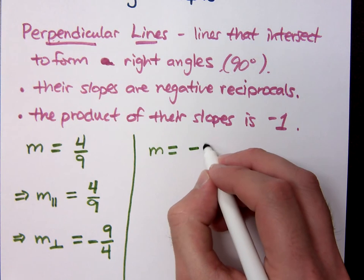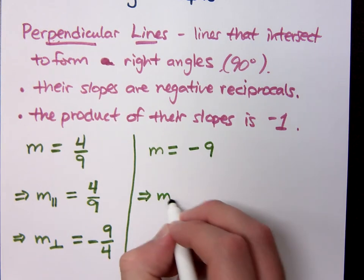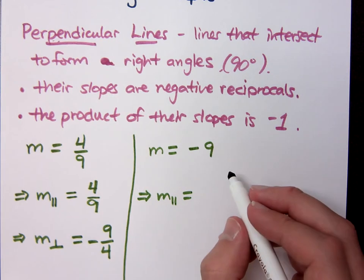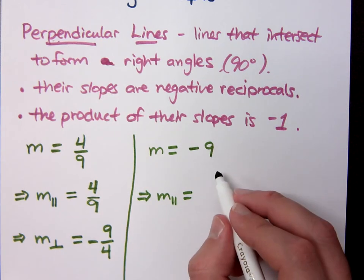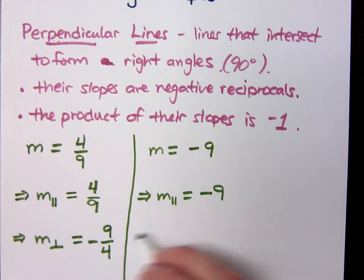What if I said the slope was negative nine? What would your parallel slope be? Negative nine. It's going to be the same thing, which is negative nine. However, what if I ask you for the perpendicular slope? One over nine.